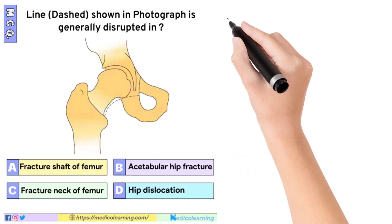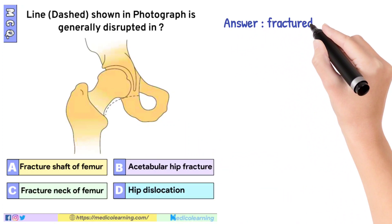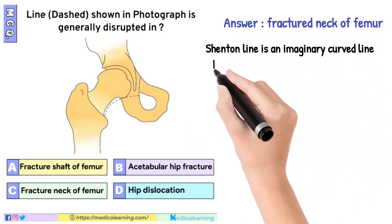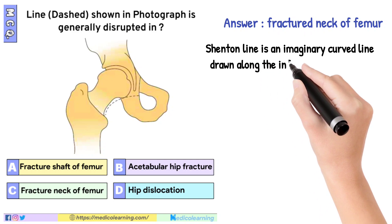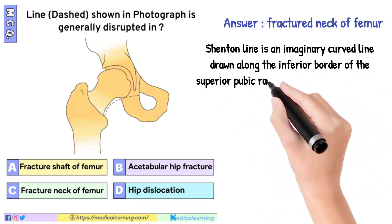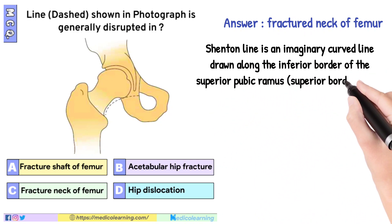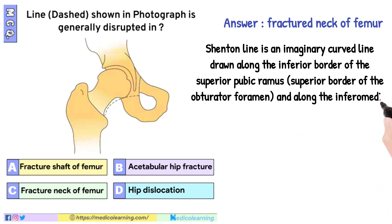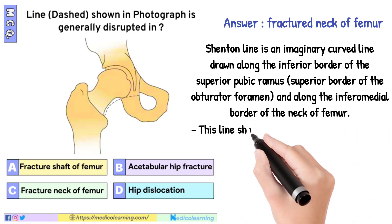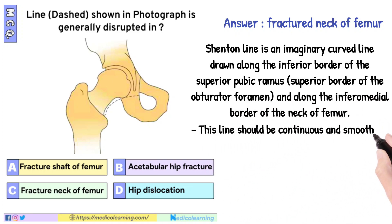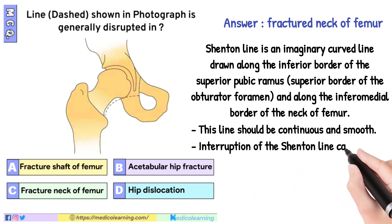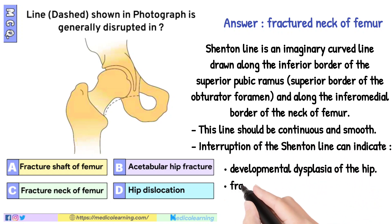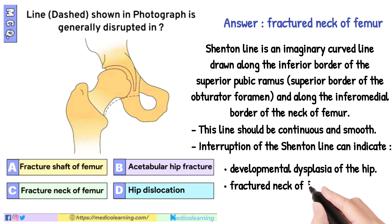In this question, the answer is fractured neck of femur. The Shenton line is an imaginary curved line drawn along the inferior border of the superior pubic ramus, and along the inferomedial border of the neck of femur. This line should be continuous and smooth. Interruption of the Shenton line can indicate developmental dysplasia of the hip or fractured neck of femur.